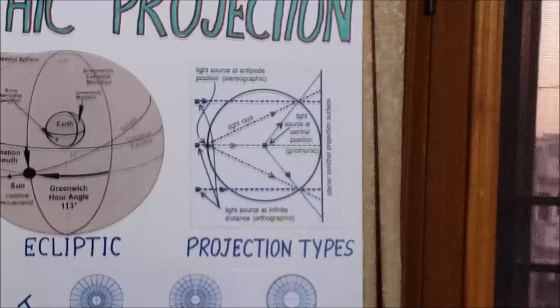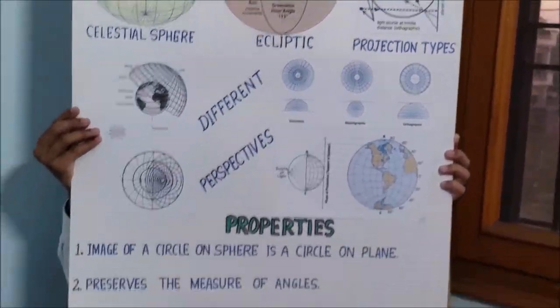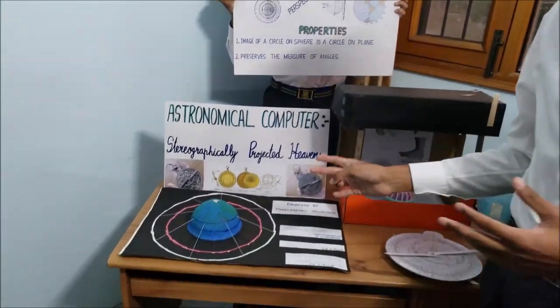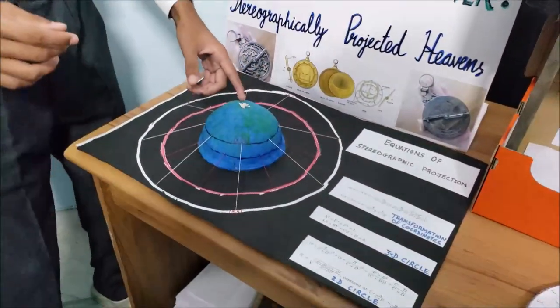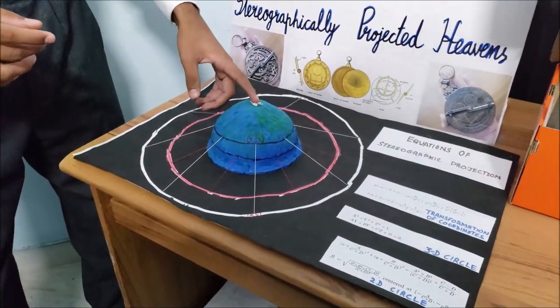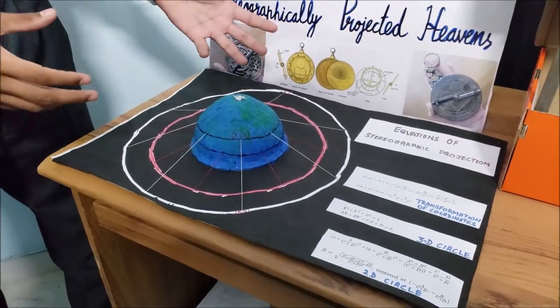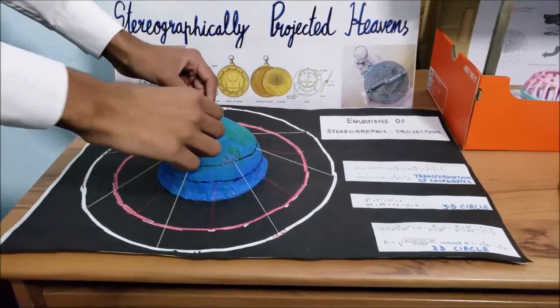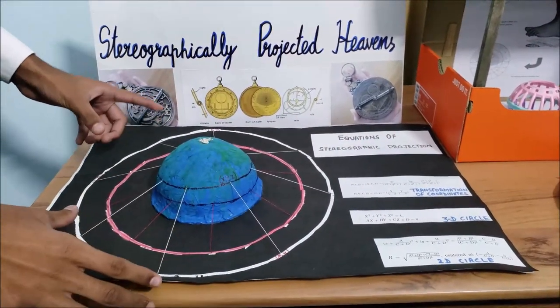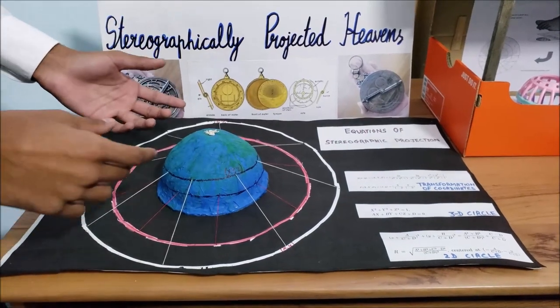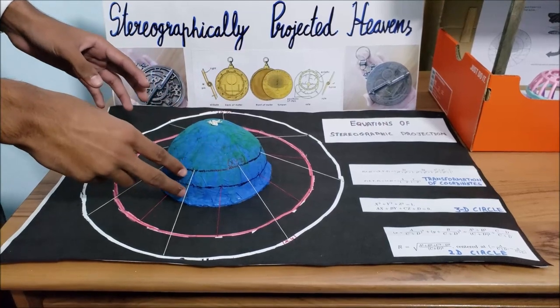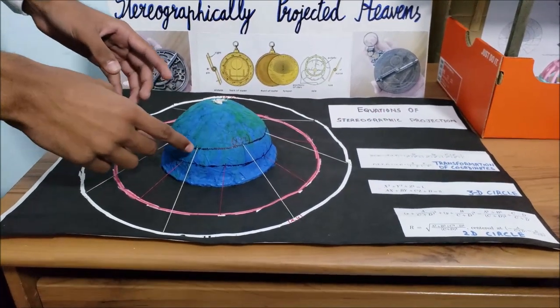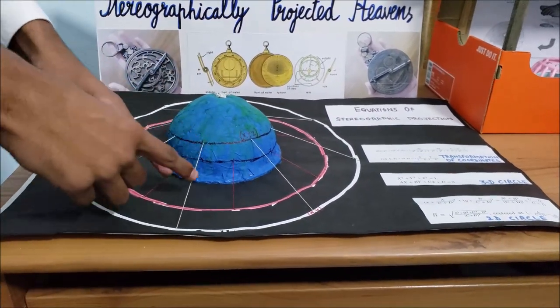So to better understand what stereographic projection is let's take a look at this second demonstration over here. Now this hemisphere at the pole of this hemisphere is a point and let's imagine this to be a source of light. From this point we have threads extending outwards which are going to be rays of light.